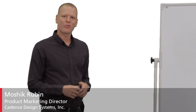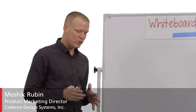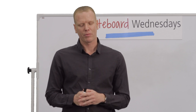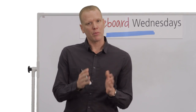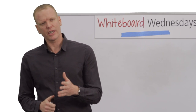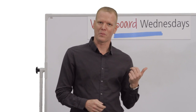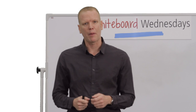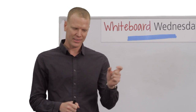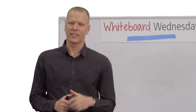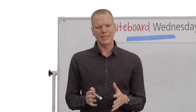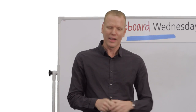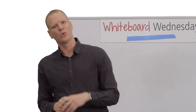Hi, I'm Oshik Rubin from Cadence, and today I'm going to talk about the MIPI CSI-2 protocol. The MIPI CSI-2, Camera Serial Interface specification, was released 10 years ago and since then it was adopted by pretty much all the different application processors and image sensor devices — so it is very likely that when you take a picture with your smartphone, the pixels go through the CSI-2 interface.